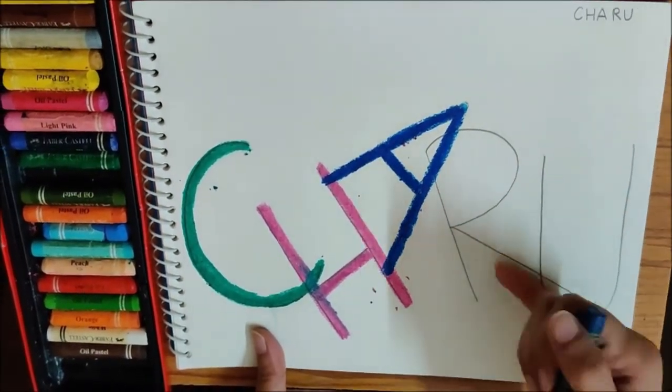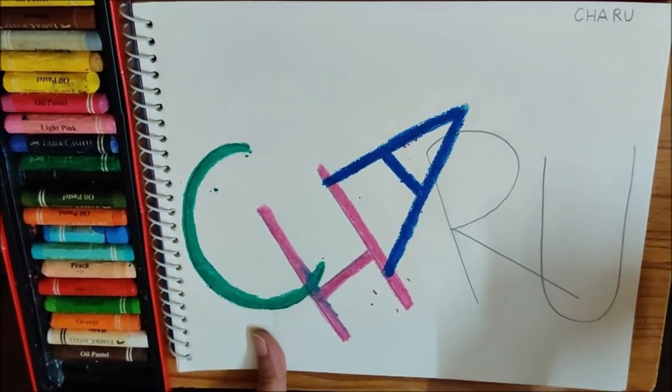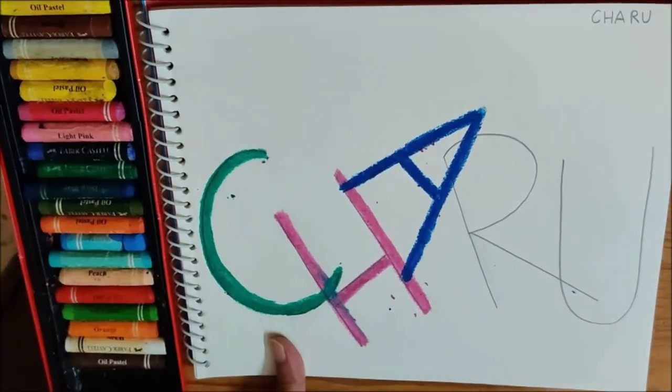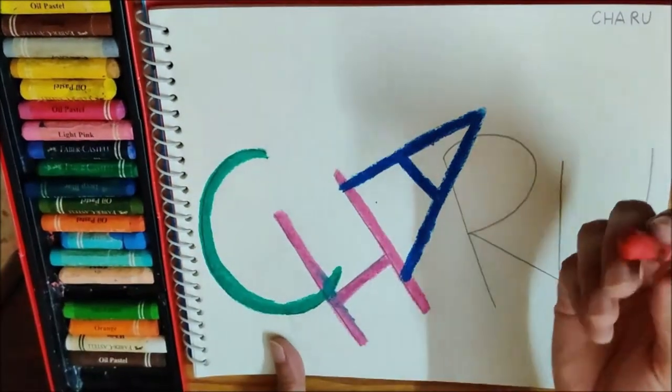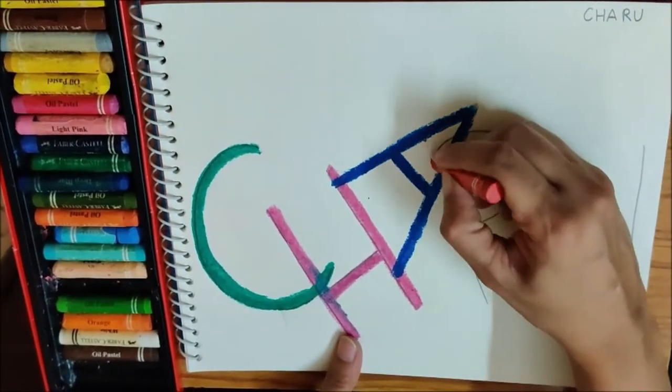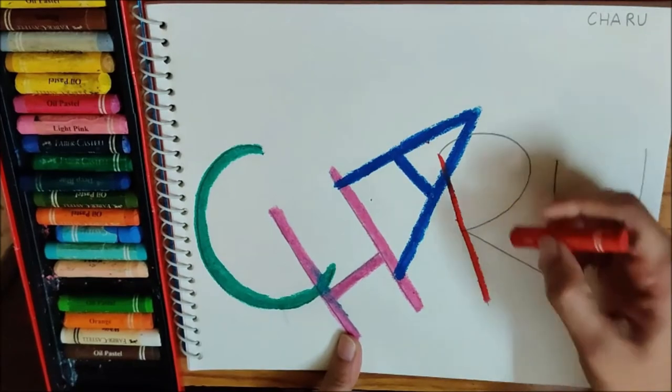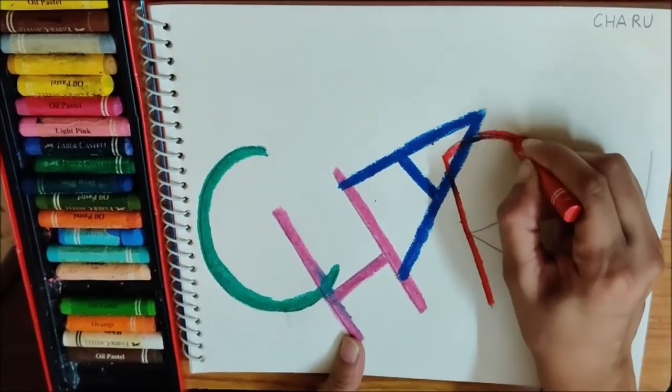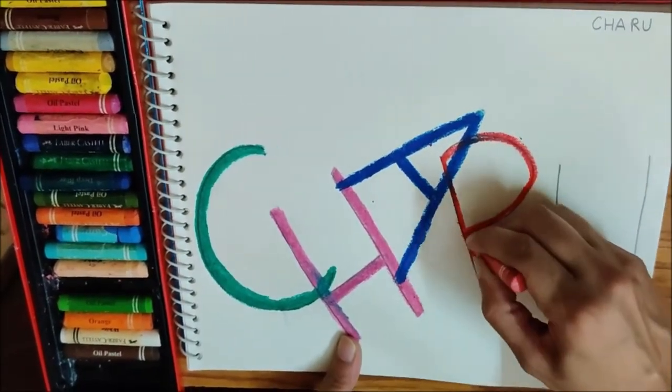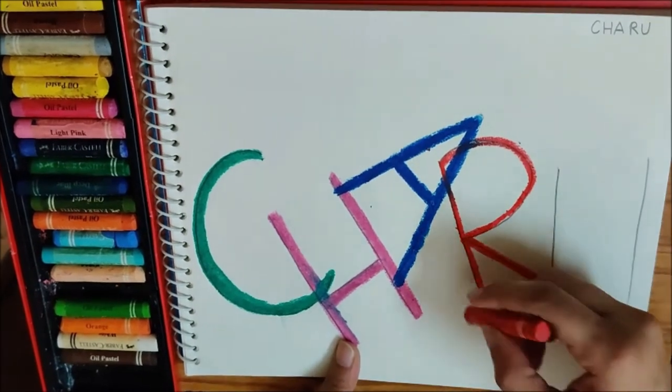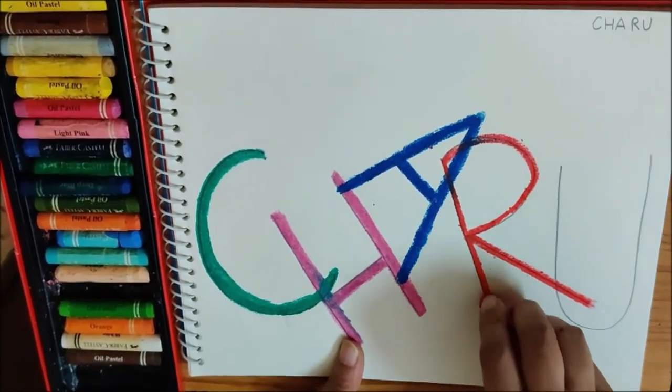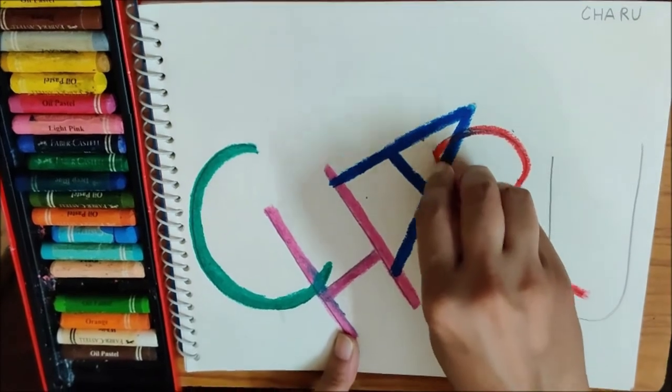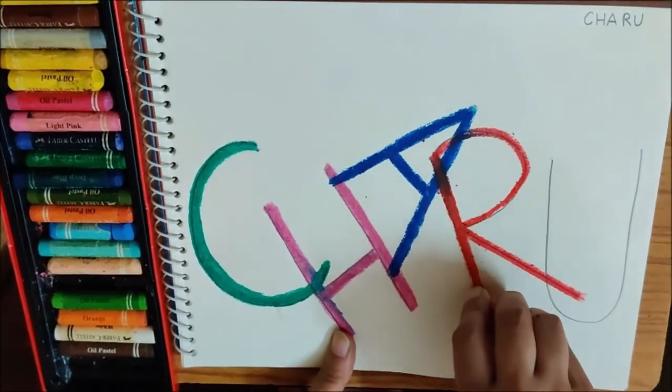Now, time to colour the next letter. What will I do? Good. I will change the colour. I am taking red now. Now, I am going to make the line thick. I have to thicken it.